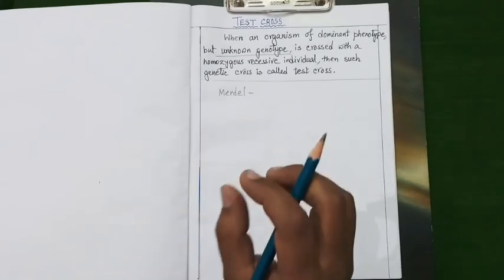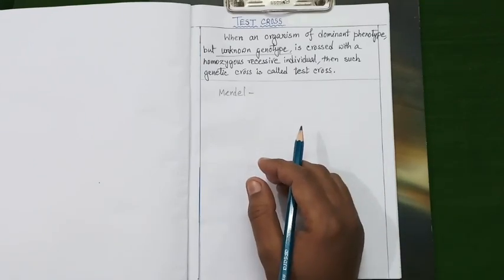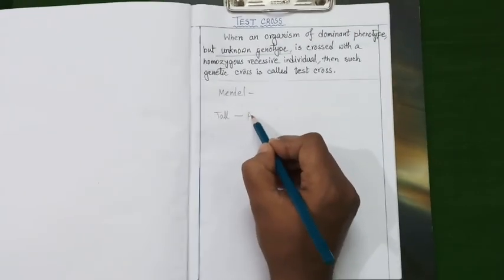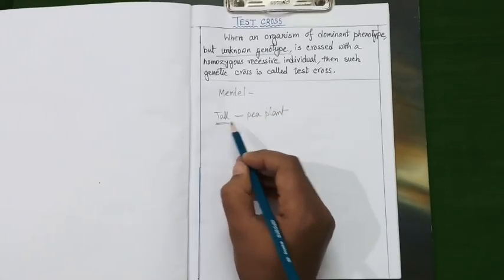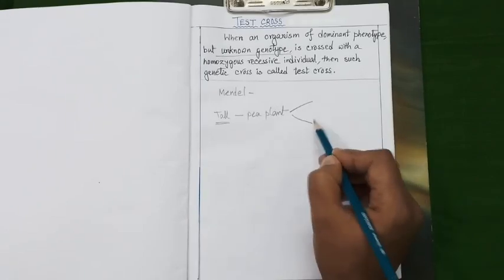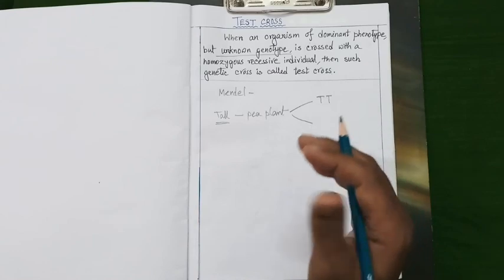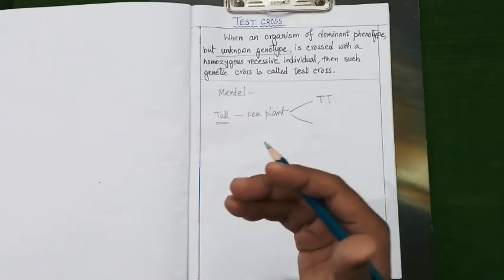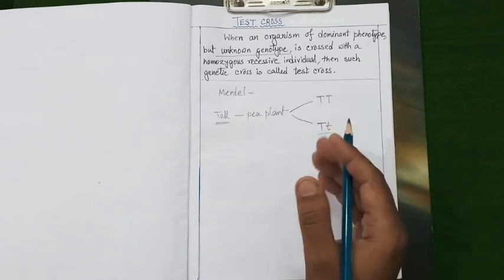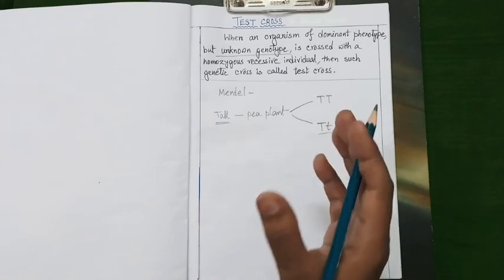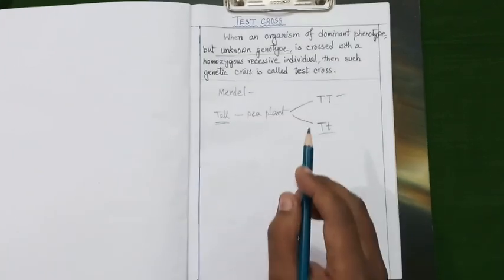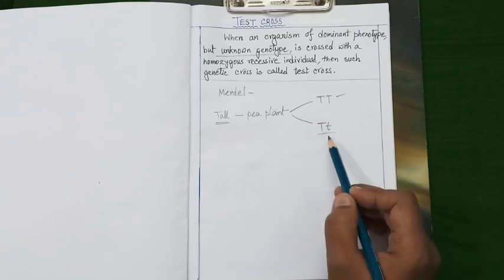Let's see how Mendel used this technique to identify an unknown genotype using the tall characteristic of the pea plant. We know that tallness in pea plants is a phenotypically dominant feature. However, a phenotypically tall pea plant may possess either a homozygous dominant genotype (capital T, capital T) or a heterozygous hybrid genotype (capital T, small t). Although the hybrid is genotypically different, it exhibits the same phenotypically tall feature. Test cross helps us distinguish between these two types of genotype.